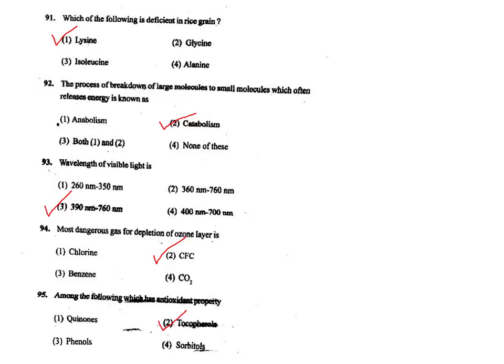Q95. Among the following, which has antioxidant property? Antioxidants are tocopherols — Vitamin E. The correct answer is option 2.